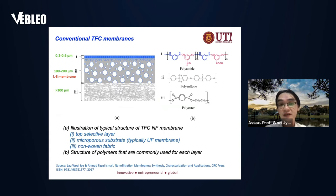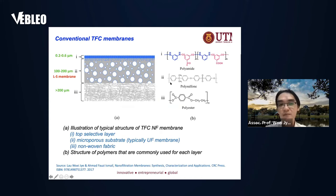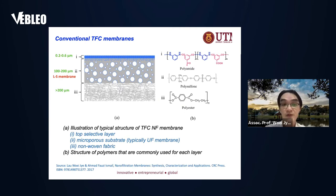When you look at the structure of the TFC membrane, it is basically composed of three main layers. The top polyamide layer is normally just a few hundred nanometers, supported by microporous membranes. On the bottom part, you have a non-woven fabric, which is normally to ensure that the membrane has good mechanical strength when you use it at high operating pressure.